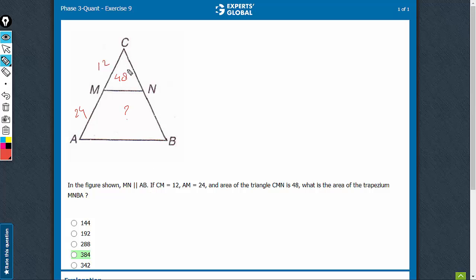The two triangles are similar, CMN and CAB, and the ratio of the sides is 12 upon 12 plus 24, 36. And therefore, square of this ratio of the sides is going to be the ratio of the areas also.